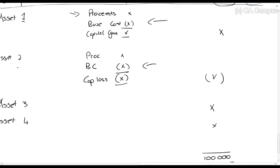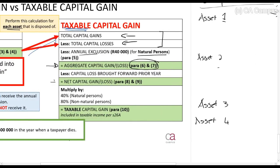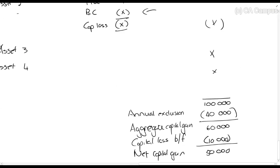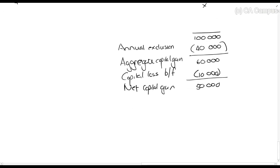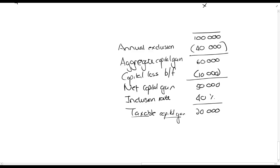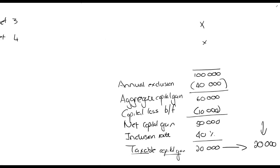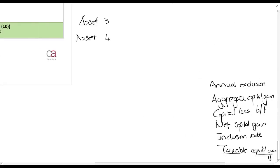From the net capital gain, if you are a natural person, 40% of that amount gets included. If you are not a natural person — like a company — 80% gets included. This is called the inclusion rate. So applying the 40% inclusion rate to a R50,000 net capital gain gives R20,000, and that R20,000 is called the taxable capital gain — the amount that goes into your rands column, included right before the donations deduction at the end of the tax calculation.